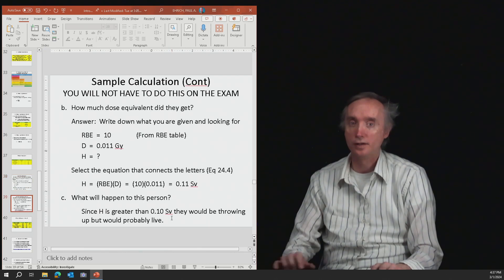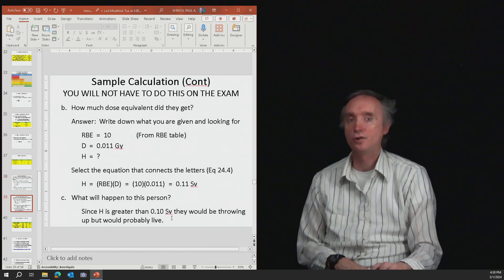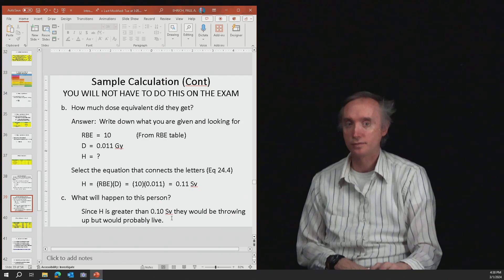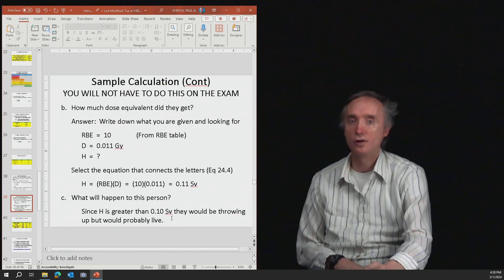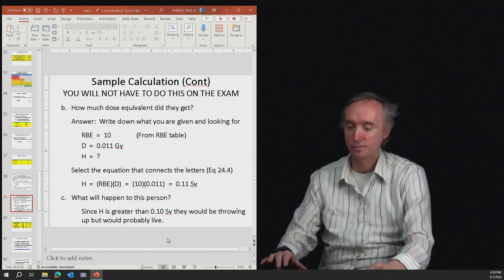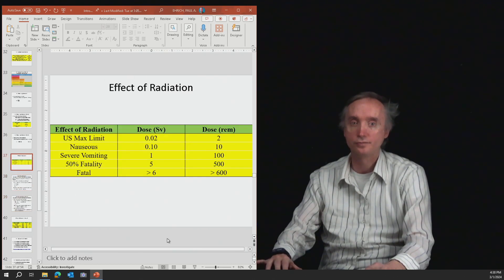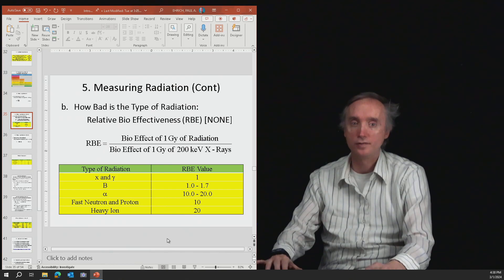Part B. How much of a dose equivalent did they get? So first, you've got to go to this chart, and we need to find fast neutrons. Okay? See the fast neutrons? So it's a 10.